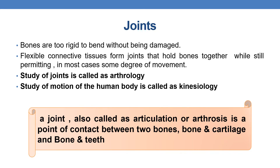Certain joints are movable. The study of joints is called arthrosis, whereas the study of motion of the human body is called kinesiology. Coming to the definition of joint: a joint, also called articulation or arthrosis, is a point of contact between either two bones, or bone and cartilage, or bone and teeth.